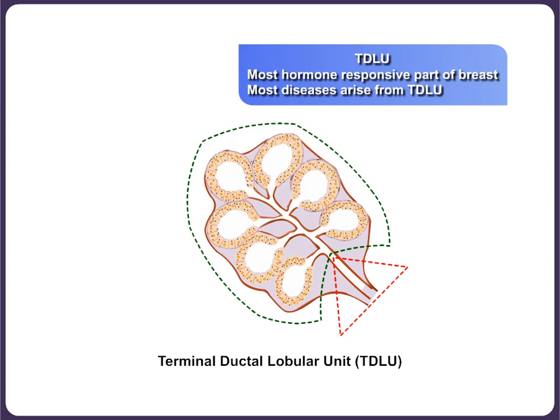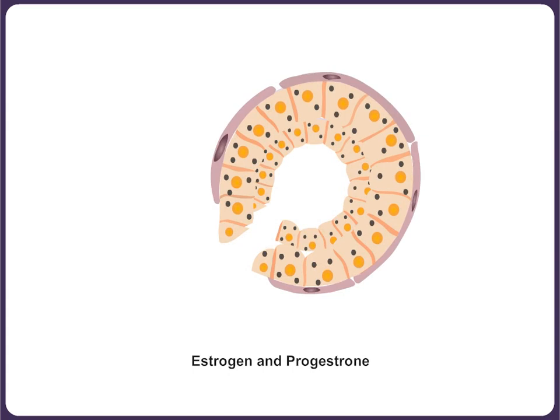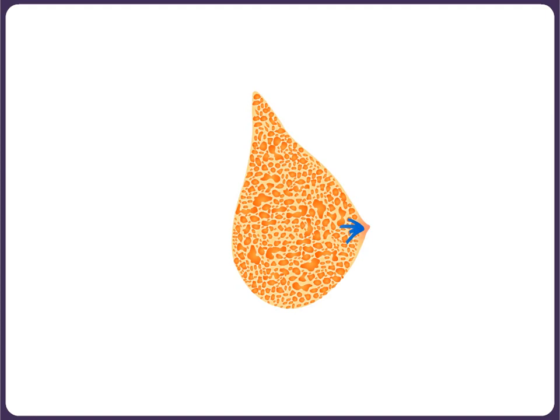The epithelial lining of the ducts and acinae has a luminal and a basal cell layer. The growth of these cells is controlled by the hormones estrogen and progesterone. Estrogen causes development of the ducts and stroma with fat deposition. Progesterone causes maturation and branching of the ductolobular system primed by estrogen. It also causes secretion within the acinus, and is also responsible for retention of water within the breast stroma. The blood levels of estrogen and progesterone change with the menstrual cycle.